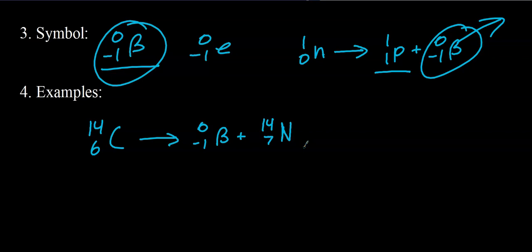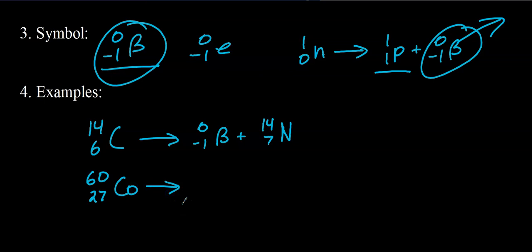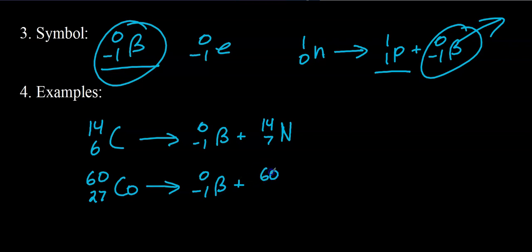Here's another example: cobalt-60 undergoes beta decay. The nuclear charge of cobalt-60 is plus 27. On the right side we put our beta particle and balance mass and charge. There's no change in mass. Charge increases by 1. What has a nuclear charge of plus 28? That would be nickel. So cobalt-60 transmutates to nickel-60 via beta decay.